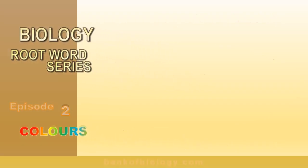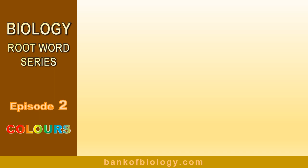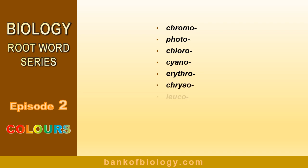we are going to discuss 10 important root words related to colors: chromo, photo, chloro, cyano, erythro, chryso, leuco, luteo, pheo, and rhodo. These are frequently used words in biology. Now we are going to analyze each root word one by one.